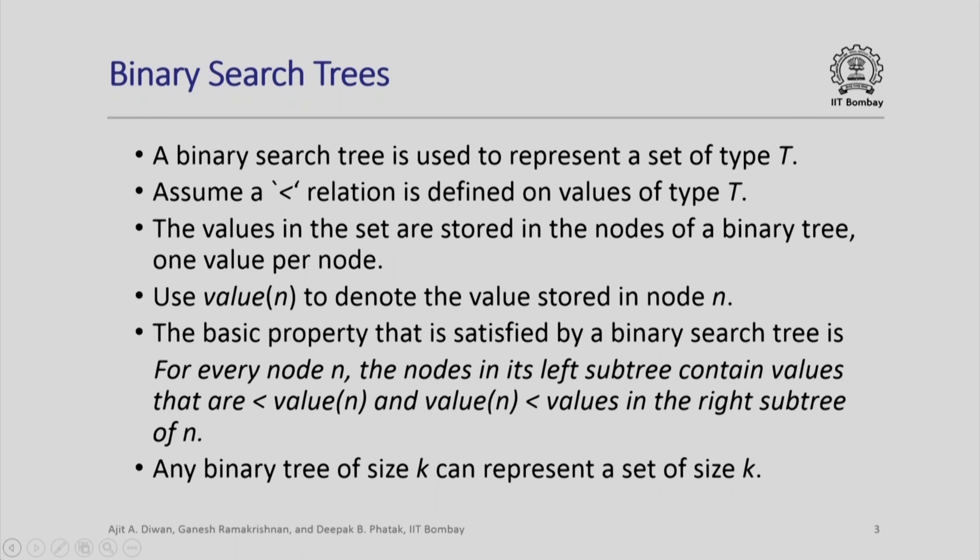The values in the set are stored in the nodes of a binary tree with one value per node. We will use value(n) to denote the value stored in node n. The basic property satisfied by a binary search tree is: for every node n, the nodes in its left subtree contain values that are less than value(n), and value(n) is less than the values in the right subtree of n.